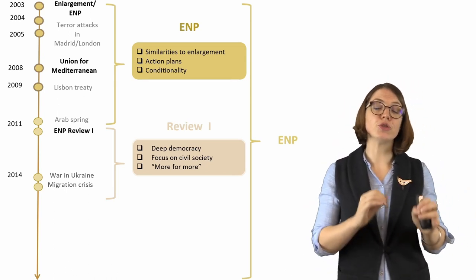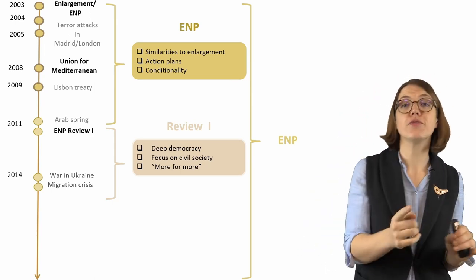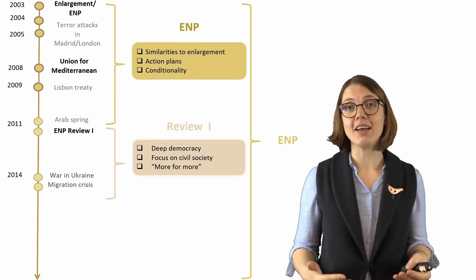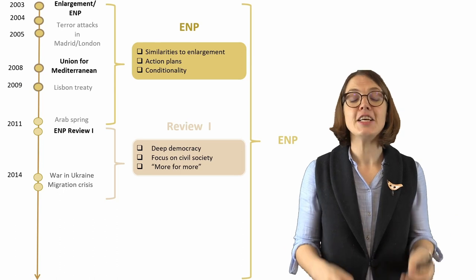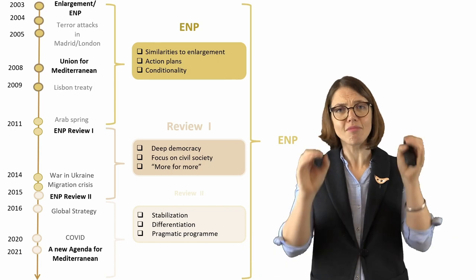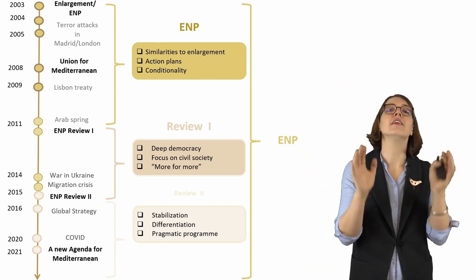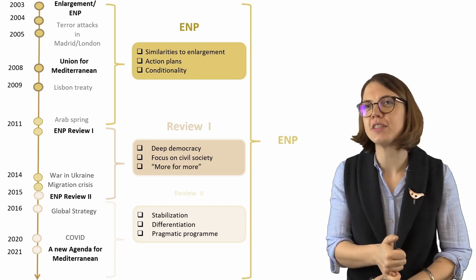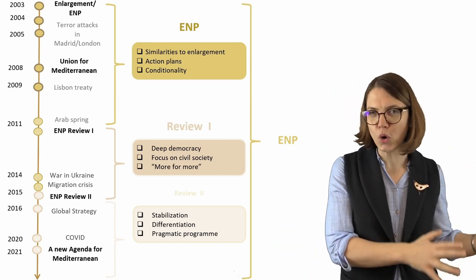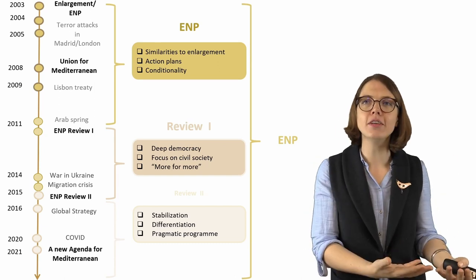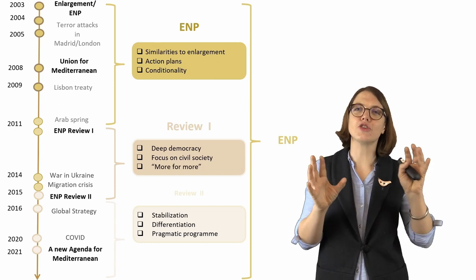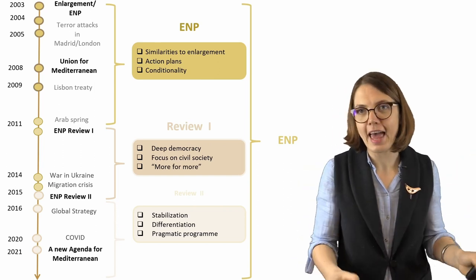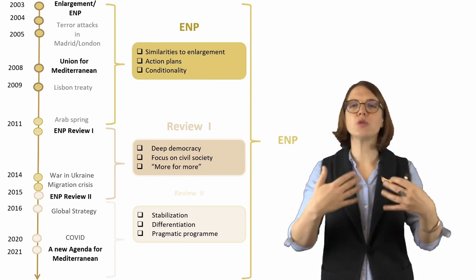The final push to rethink ENP came from the war in Ukraine — Russia's first invasion — and the massive migration crisis at Europe's southern borders in 2015. In 2015, the EU conducted an inclusive review asking how neighborhood policy should change. The 2015 review talked about stabilization instead of transformation, differentiation — working with those with whom agreement is possible — and was notably more pragmatic. Though the document still mentions values, the tone is significantly scaled down.